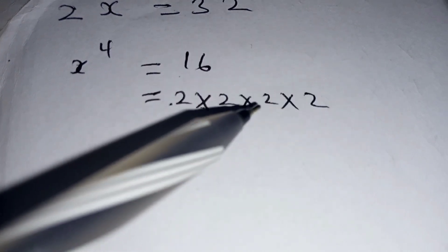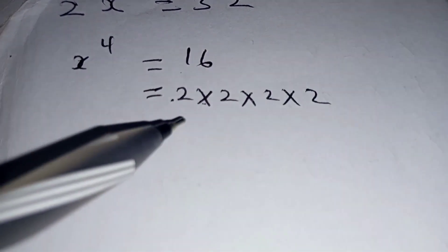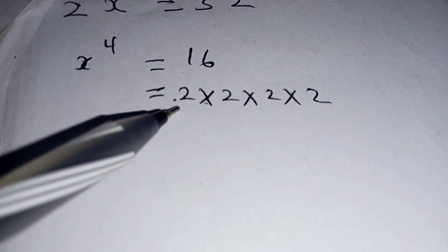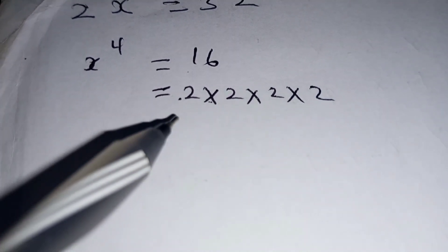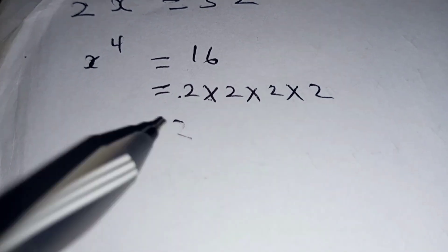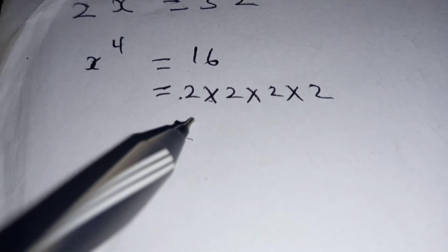4 times 2 is 8, and 8 times 2 is 16. So we convert this to index form because we have 2 repeated 4 times, so we are going to have 2 to the power of 4.